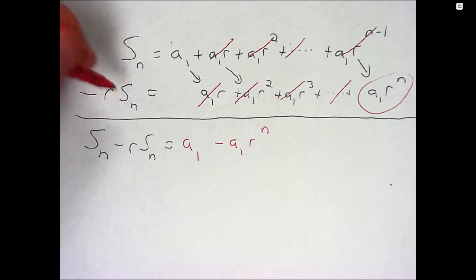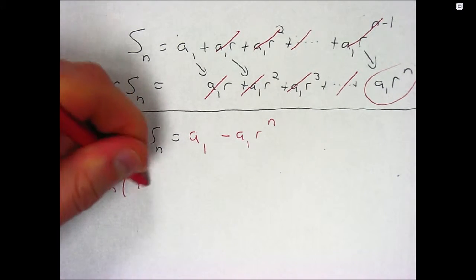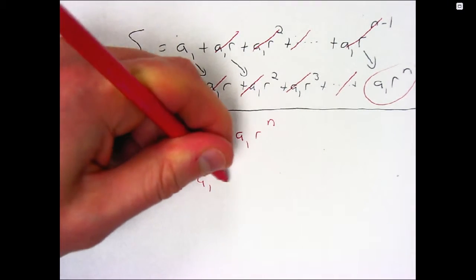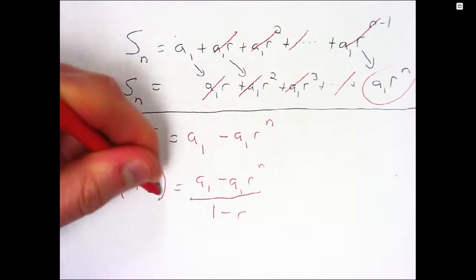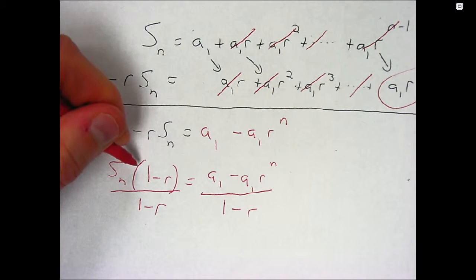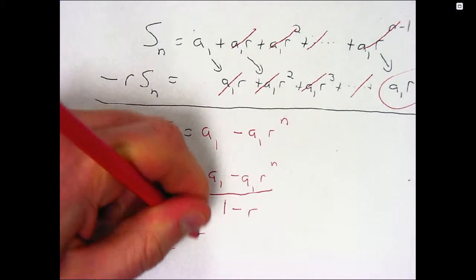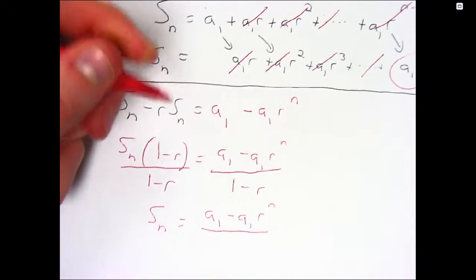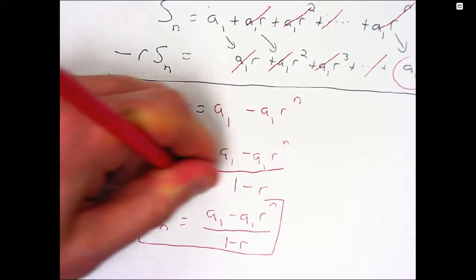And what am I trying to do? I'm trying to solve for S sub n. And so I'm going to factor that S sub n out, pulling that common factor out. And then I'm going to divide by 1 minus r, right? And so when I divide by 1 minus r on both sides, I'm left with S sub n. And so the sum of a geometric series formula is given by this.